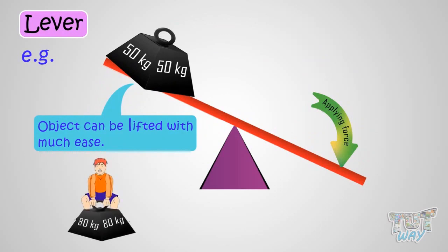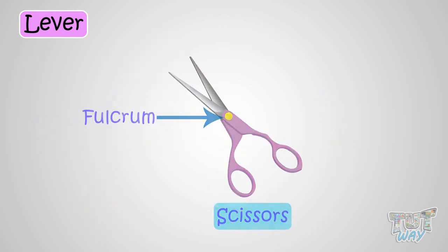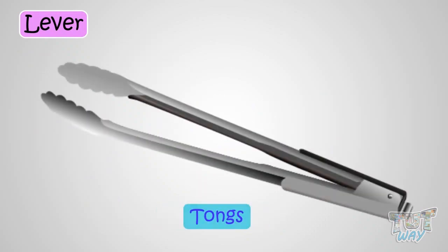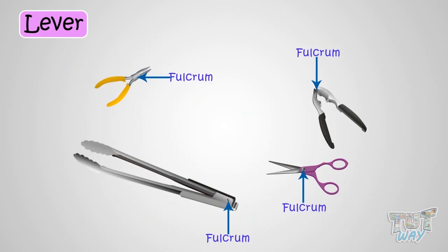Let's see a few things that use the concept of a lever for their working. Scissors, hammer claws, pliers, nutcrackers, tongs. All these things are based on the principle of a lever.